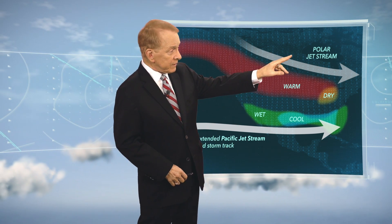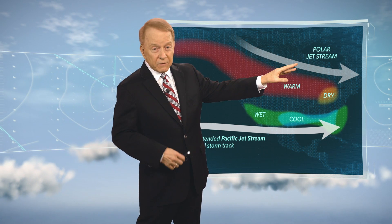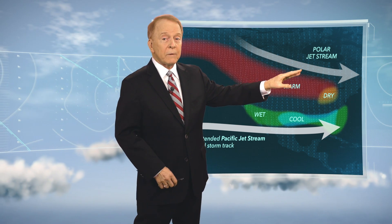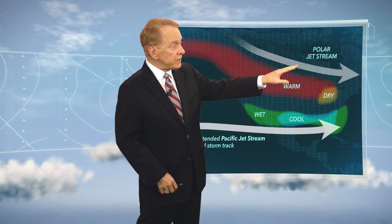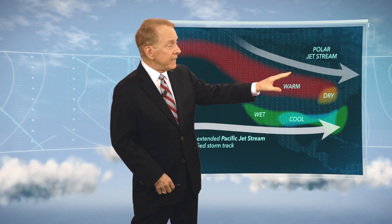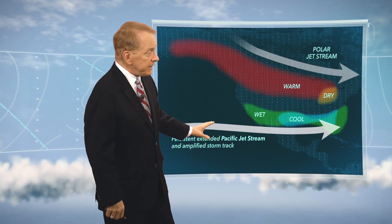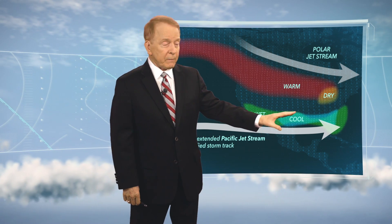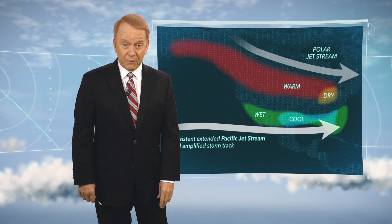That stops the Arctic air — not totally — but it does reduce the number of really cold outbreaks, and then the southern jet brings quite a bit of precipitation and stormy weather to the south.